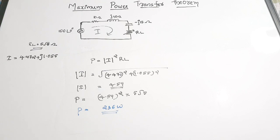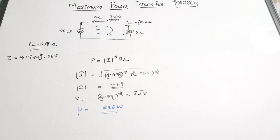In summary, the Maximum Power Transfer Theorem states that when maximum power is transferred to the load resistance, the source impedance equals the load impedance. This condition is used to calculate load impedance and hence maximum power. This was a quick revision video — if you are preparing for network theory for competitive or semester exams, I hope you found it useful. Please give it a thumbs up, share with friends, and subscribe for more videos.